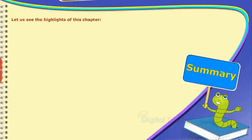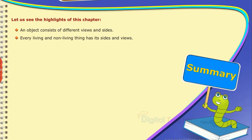Summary: Let us see the highlights of this chapter. An object consists of different views and sides. Every living and non-living thing has its sides and views. Each and every view is different from the other.